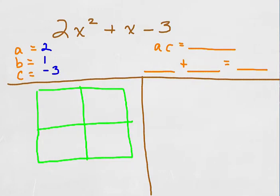After that we can multiply a times c. 2 times negative 3 is negative 6, and I need to think of factors of negative 6 that will also add up to b, which is 1.